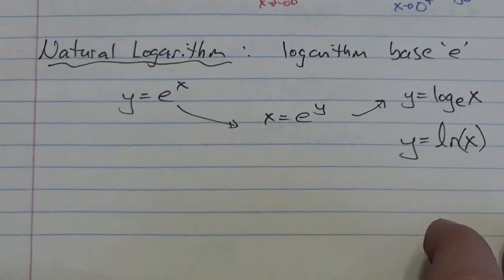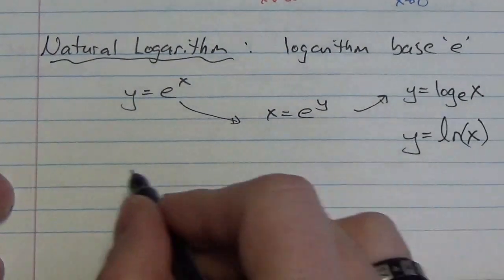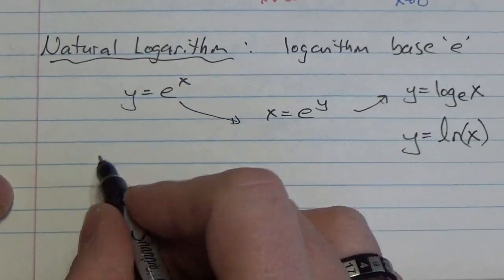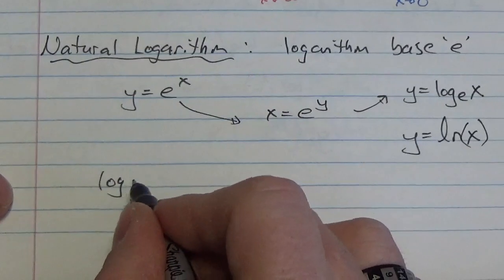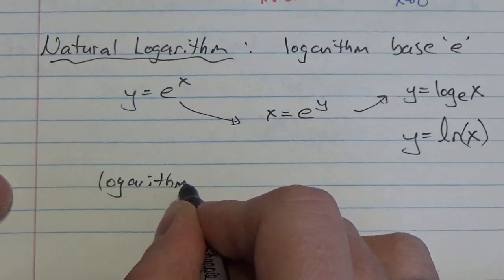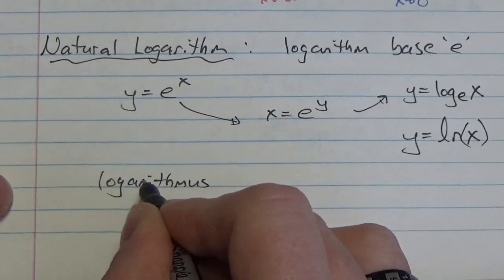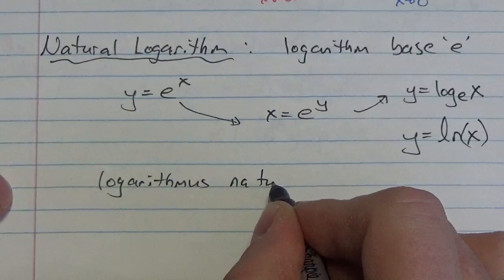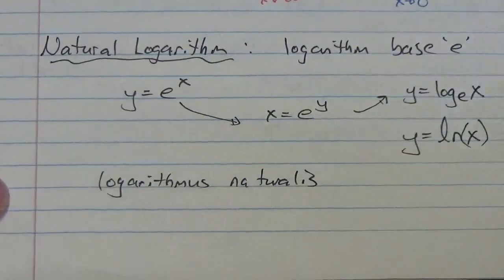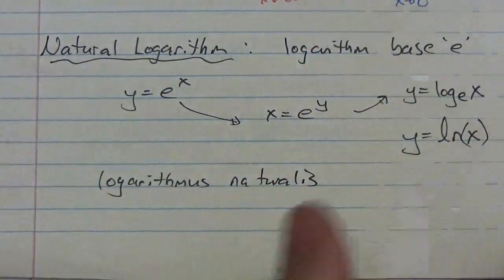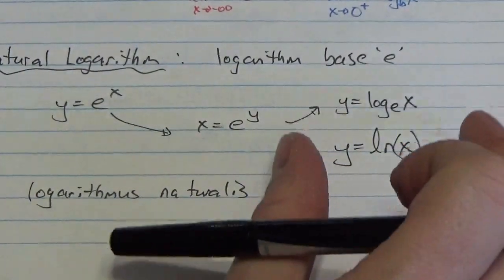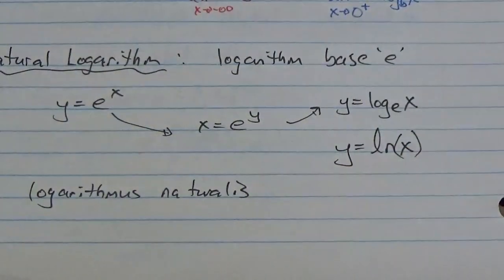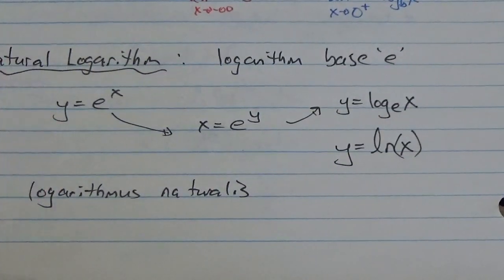What that ln stands for is logarithmus naturalis — that's some Latin. Anyway, this is a logarithm base e. It's very special because the base is e. In fact, if you look at your calculator, on the bottom left-hand side where the log button is, you'll notice just underneath it is the ln button. Common logs, natural logs — really, really important here.